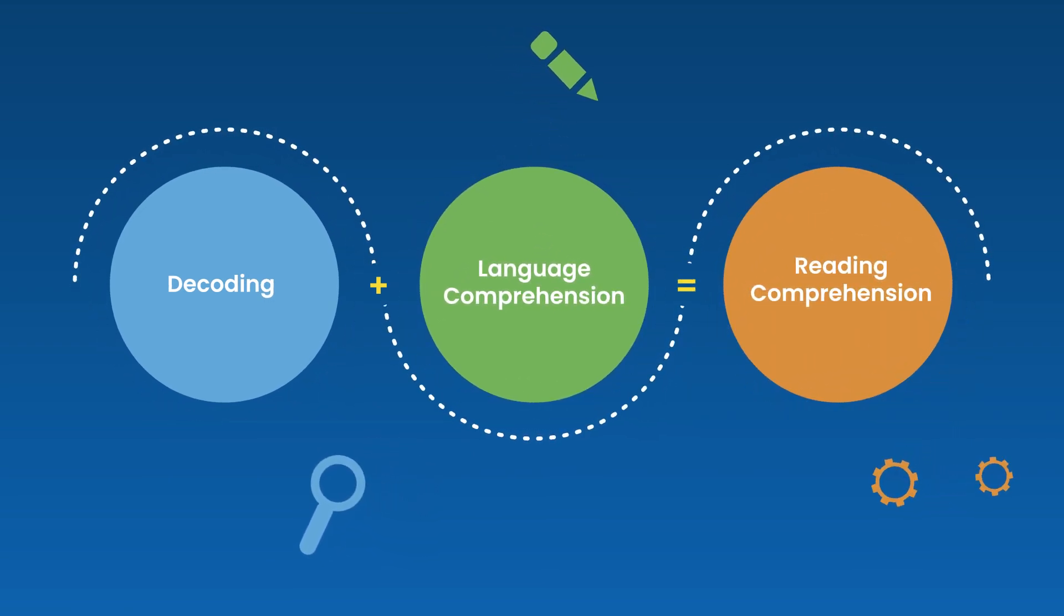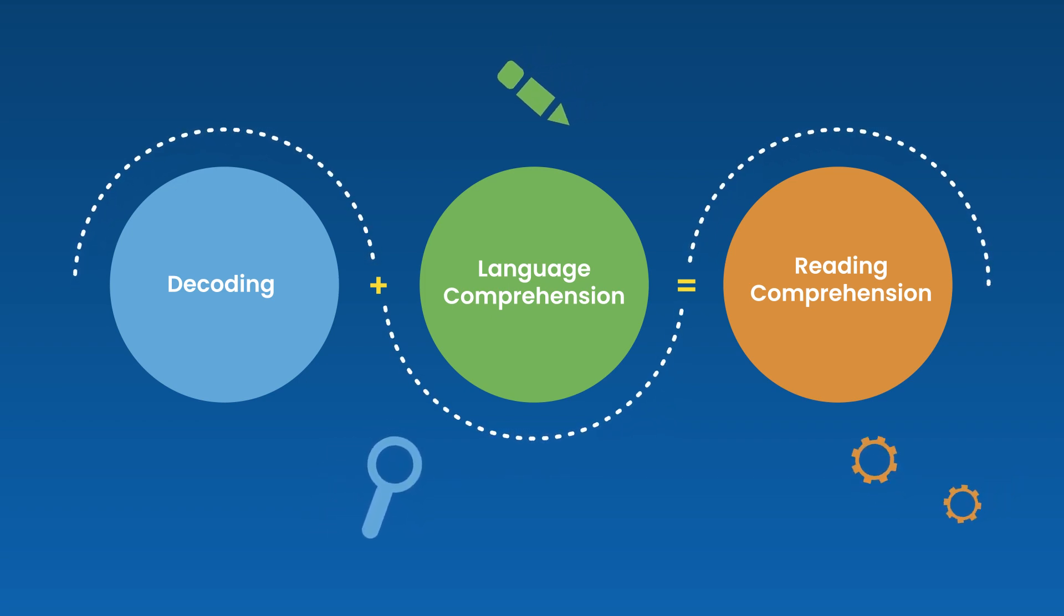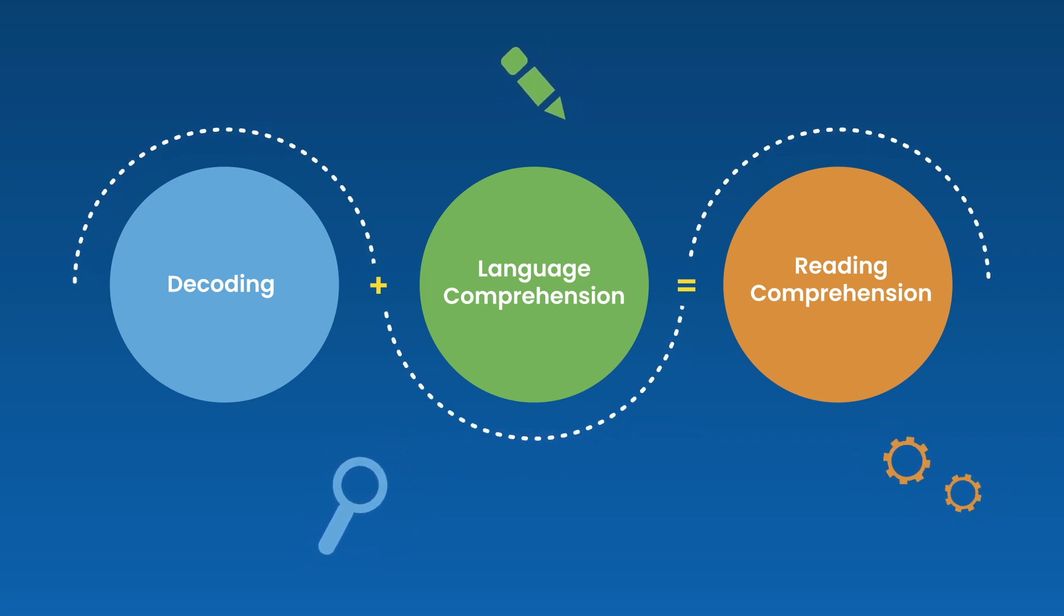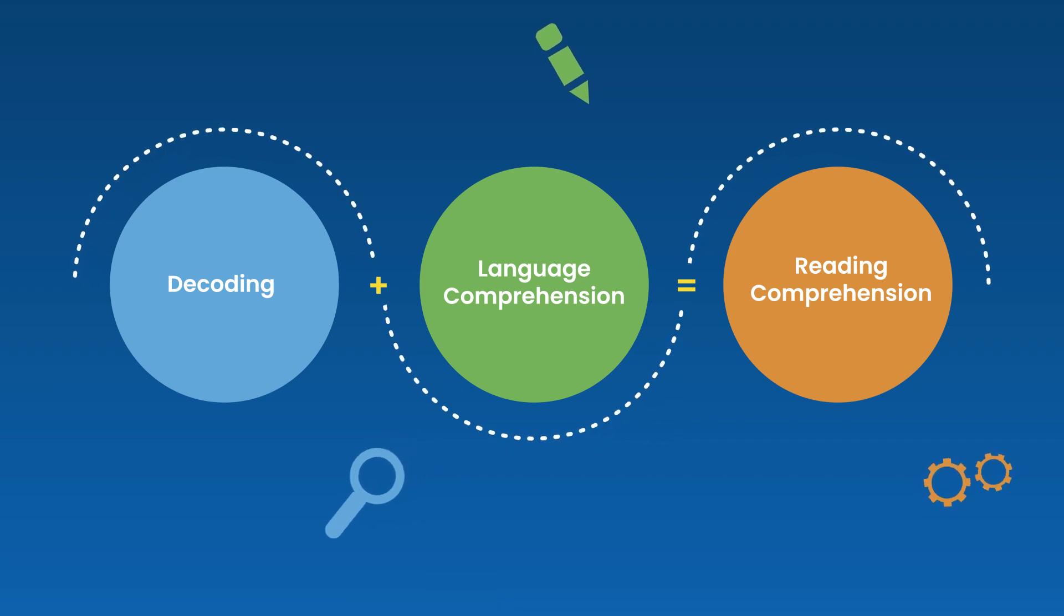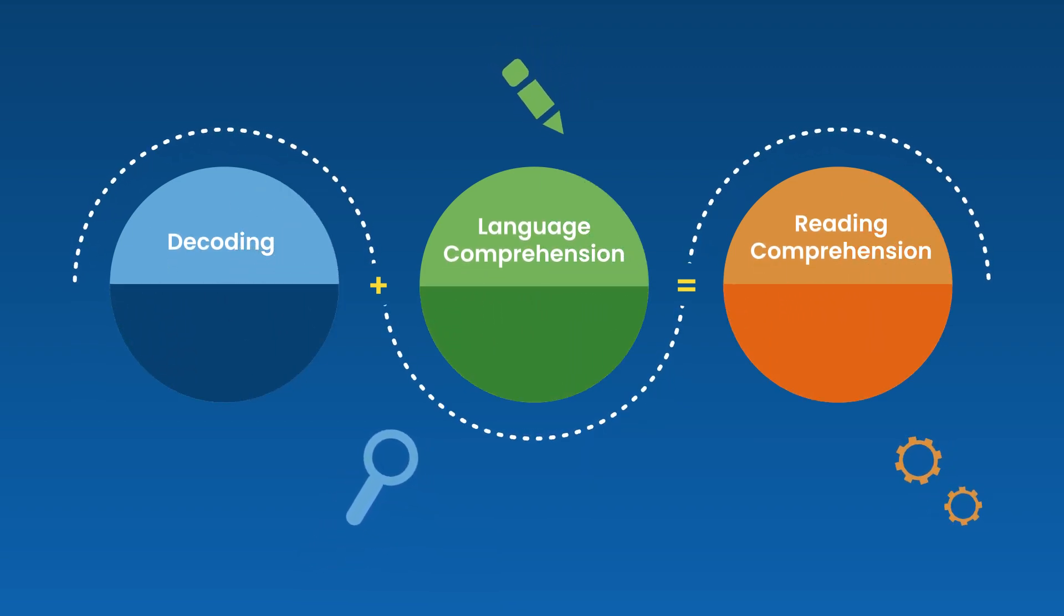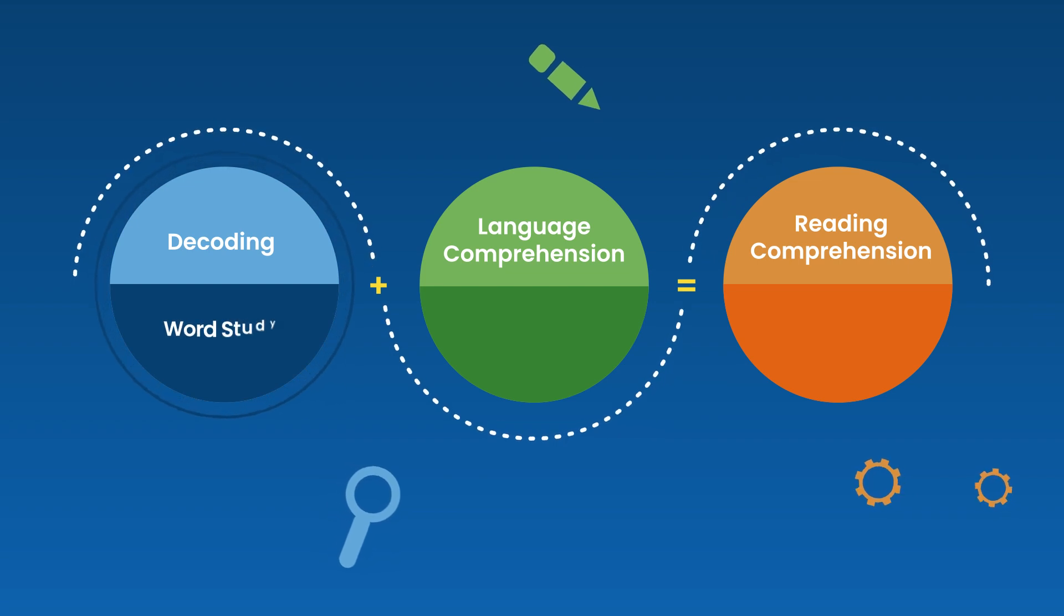Whatever a student's individual challenges, Lexia Power-Up Literacy allows students to receive specific practice and instruction in the components they need most. This is why Power-Up's approach splits instruction into three specific strands: word study, grammar, and comprehension.